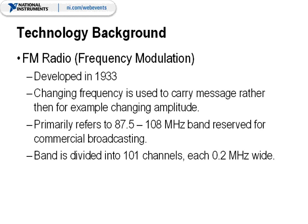The second step is we take this baseband signal and modulate it into a carrier frequency for transmission. This carrier frequency is usually quite a bit higher than the baseband frequency because it is generally much easier to transmit higher frequency signals than lower frequency signals. The frequency it is modulated to for transmission is what we refer to as the FM band. This FM band is 87.5 MHz to 108 MHz and is reserved for commercial broadcasting, divided into 101 different channels each consisting of about 200 kHz of bandwidth.